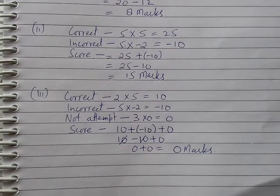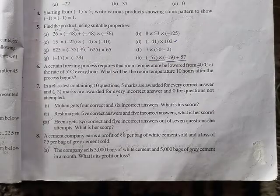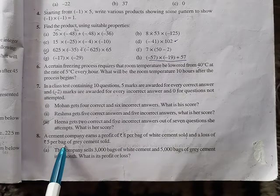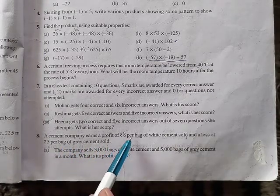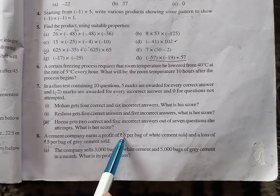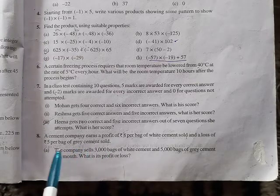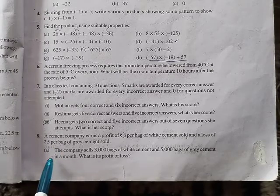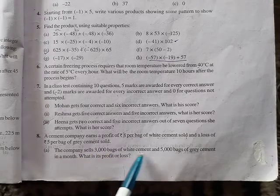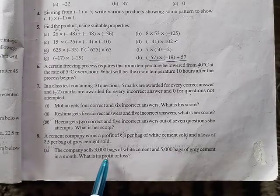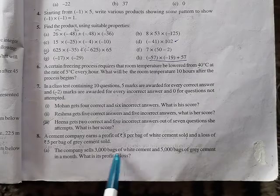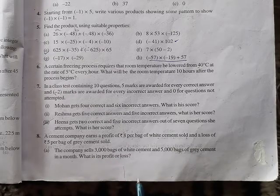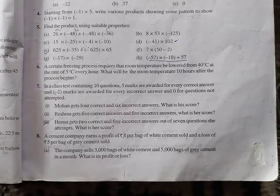Next question is number 8. A cement company earns a profit of Rs. 8 per bag of white cement sold, and a loss of Rs. 5 per bag of grey cement sold. The company sells 3,000 bags of white cement and 5,000 bags of grey cement in a month. What is its profit or loss?